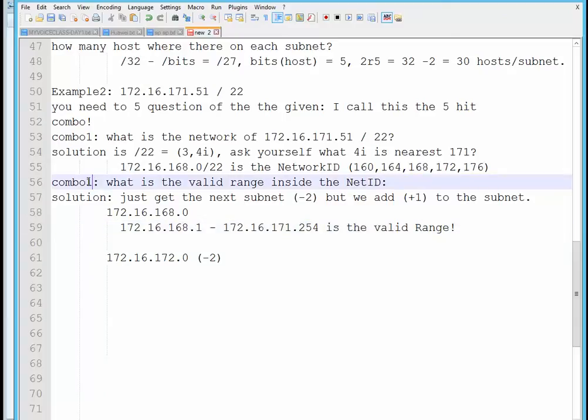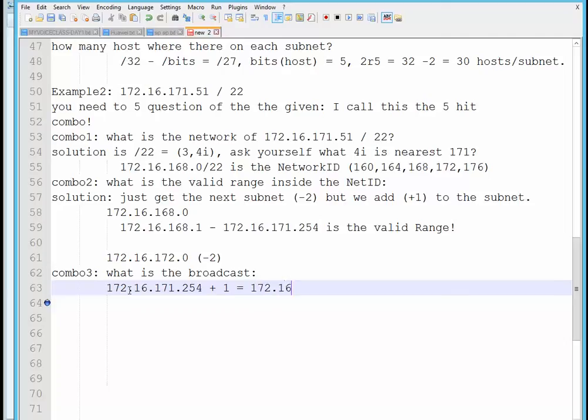This will be combo number three. Combo number three question, that's why it's called a five-hit combo is, what is the broadcast? Well, at this point, things will be much easier because all you have to do is just add one to the last valid IP, which would in fact give you the broadcast: 172.16.171.255.